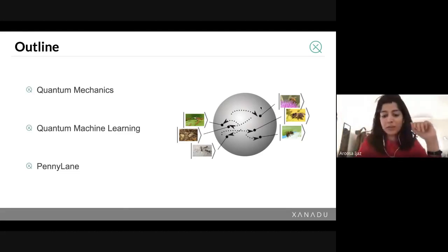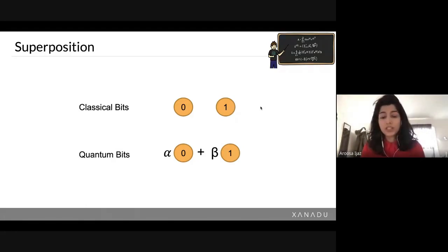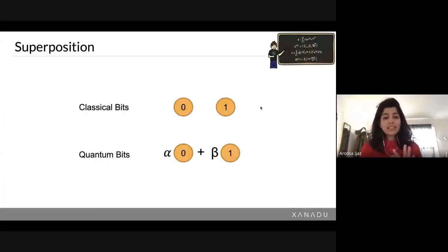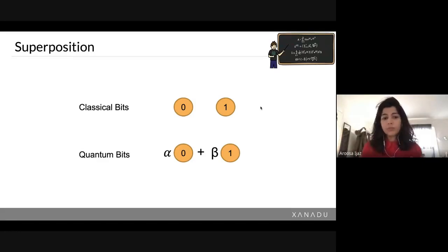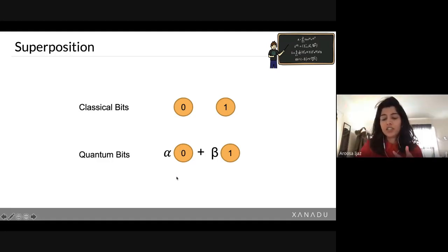The first thing that is very unique to quantum mechanics is superposition. We know that in classical information theory we have classical bits that are binary — they can be either zero or one. When we go towards quantum mechanics and want to represent information in quantum bits or qubits, this changes from being binary to something that is a superposition, so the state could be a fraction in zero and a fraction in one — it's sort of like a probability distribution.